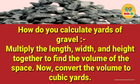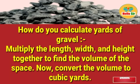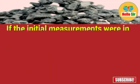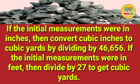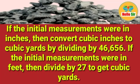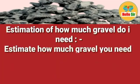So how do you calculate yards of gravel? First, multiply the length, width, and height together to find the volume of the space. Then convert the volume to cubic yards. If the initial measurements were in inches, convert cubic inches to cubic yards by dividing by 46,656. If the initial measurements were in feet, divide by 27 to get cubic yards.